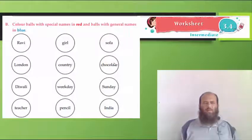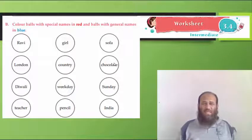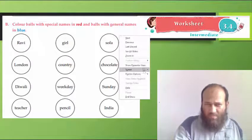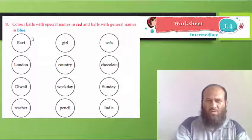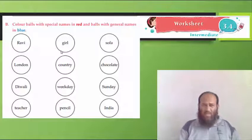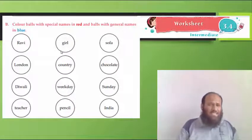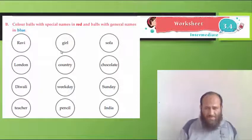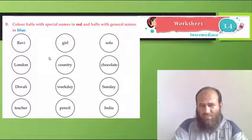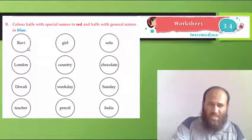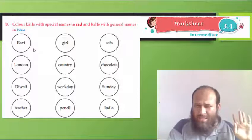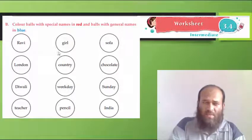Then, now here we have to color the balls with special names in red and balls with general names blue. I have blue color ink now, and we are going to color general names with blue. Ready? I have one name Ravi. Ravi, is it a special name? Yes. It is name of a boy. So, it is a special name, not a general name. So, will I color it blue? No. I will color it red.